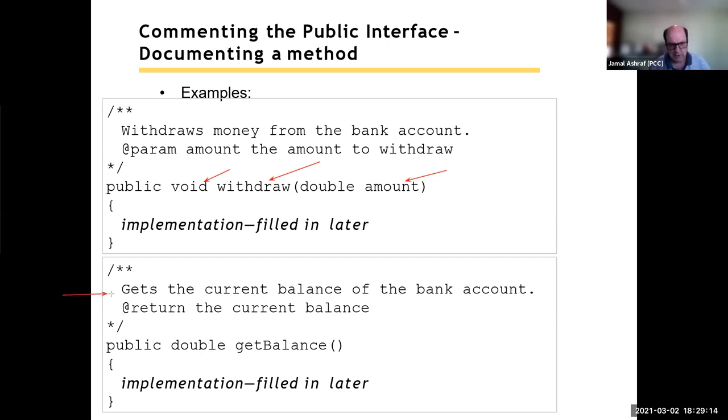In this case, I describe what this method is. The first line is always what the method is going to do, what's the purpose of the method. Then you are going to be doing the @return. What is it going to return? In this case, it's going to return the current balance. Are we okay with this? Any questions on this?